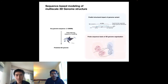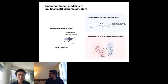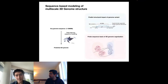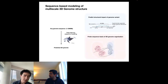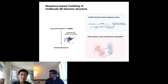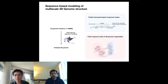The first application is predicting the impact of genomic variants. In principle, we can predict the effect of any variant by introducing it into the sequence, making predictions, and comparing the predicted structures with and without the variant. Because we can now model very long sequences up to an entire chromosome, we can model almost any large structural variant.